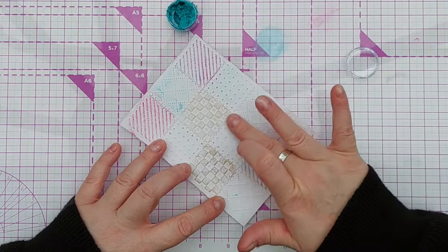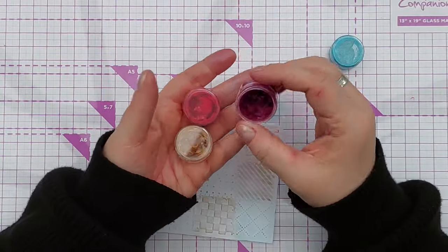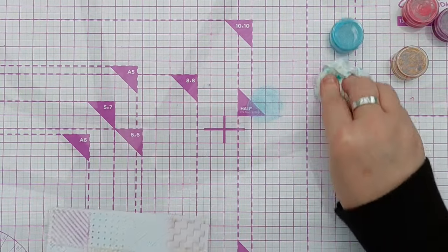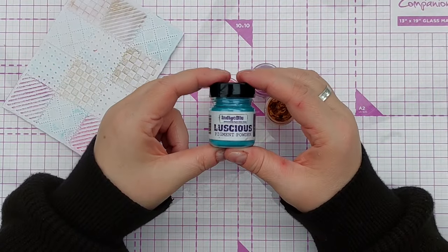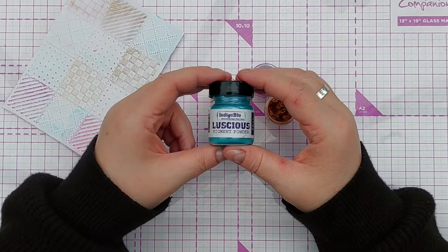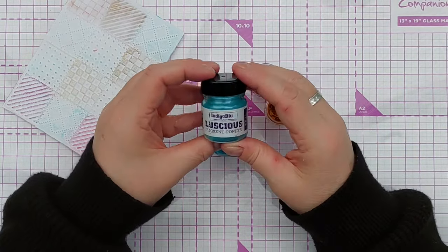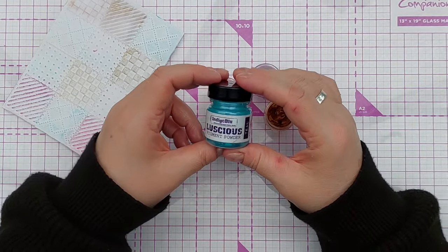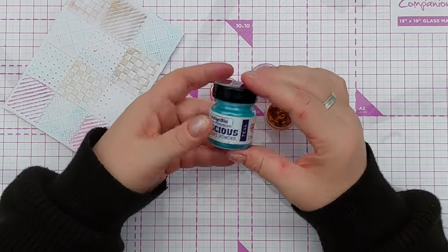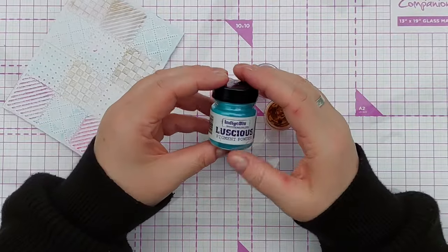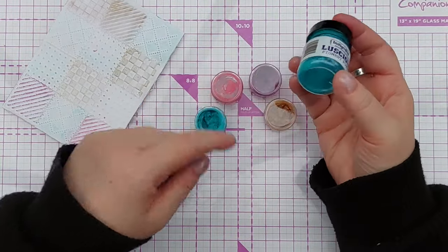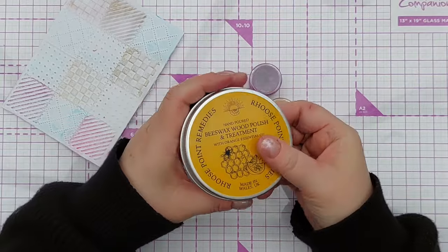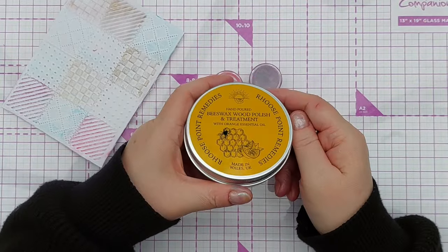These ones I made a couple of weeks ago and they're still in exactly the same state, so I think these will keep for ages. I don't think there's any reason why they will go off or go bad. I do know that Indigo Blue do something called gilding gum which you can use to make gilding wax with your Luscious powders or other pigment powders. I'm sure other manufacturers of pigment powders do something similar. But this does the trick and I'm sure you'll be able to source something similar wherever you are in the world.